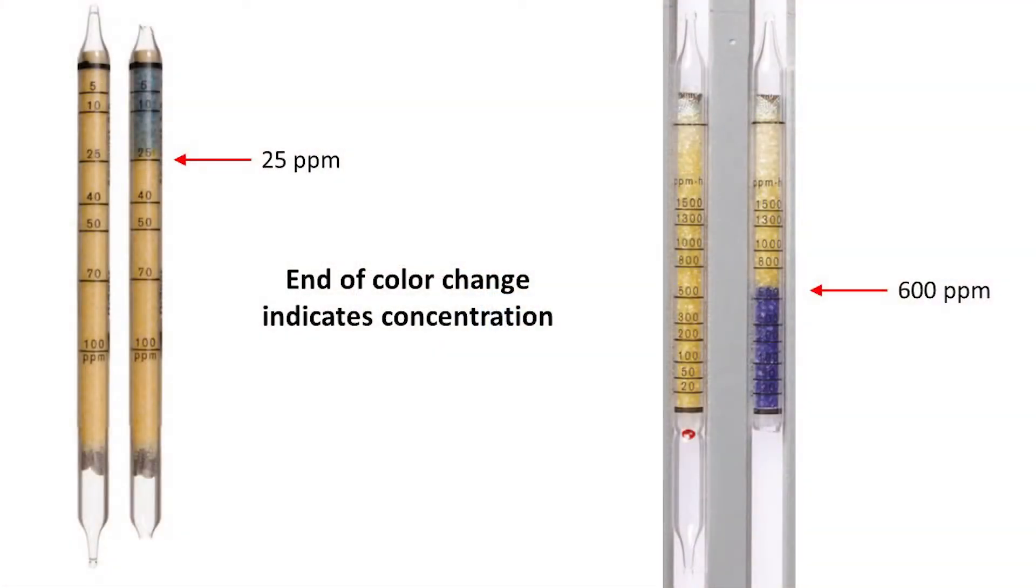The ammonia concentration is determined by reading a scale along the tube at a location where the color has stopped changing.